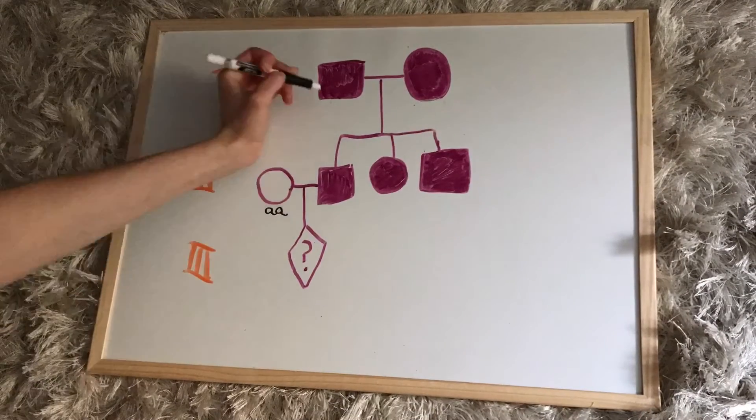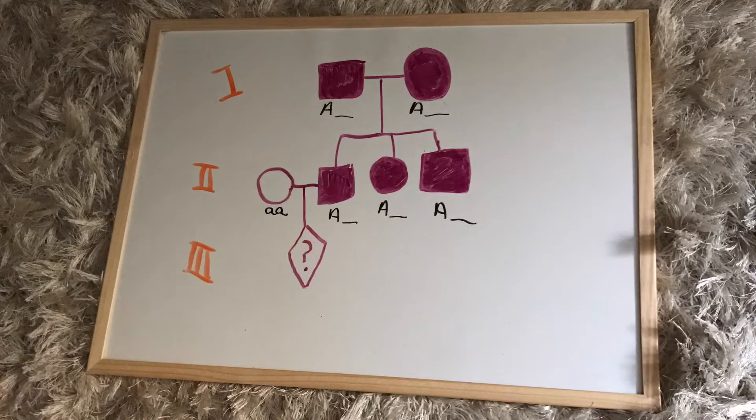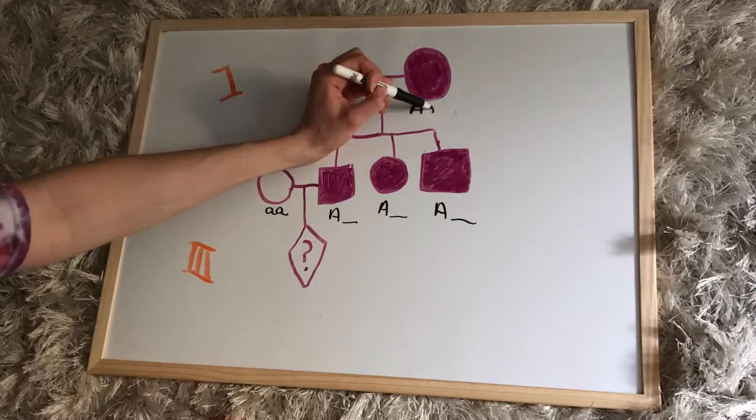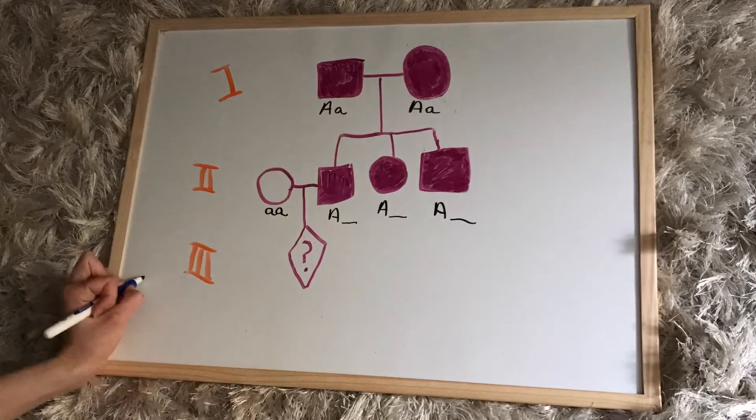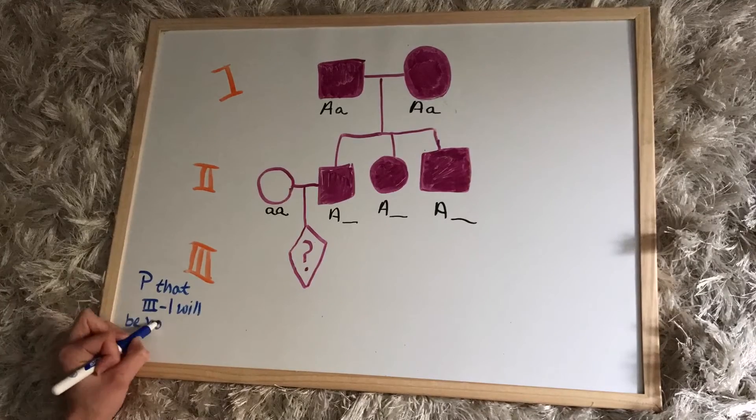Now let's do a problem with an unknown. So for this one, I'll help you out a bit. Both of the parents in generation one are heterozygous and with that we can move on to our problem, which is the probability that the child in generation three is homozygous recessive.